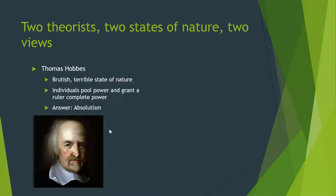Thomas Hobbes, a mid-17th century English political philosopher, basically believes that the state of human nature is war — that mankind is brutish, nasty, and competitive. So what needs to happen to control these base urges of human nature is absolutism. People agree to give up some of their rights to live under an absolute ruler, who then protects people from their own innate terrible urges. Hobbes says this in his most famous treatise, Leviathan, published in 1651.